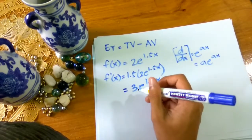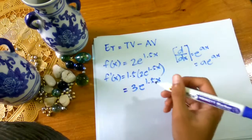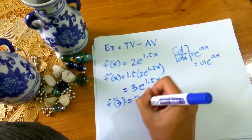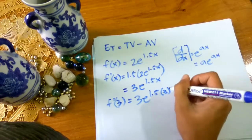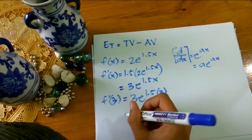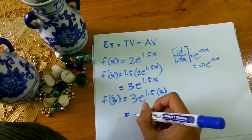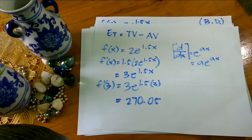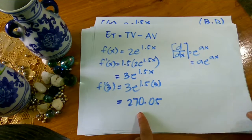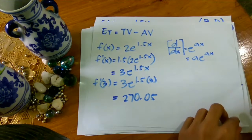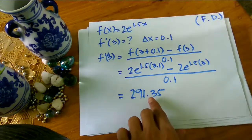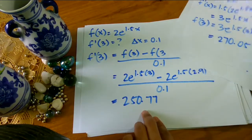So let us now find the true value of this function by using x = 3. We get 3e raised to 1.5 times 3. By calculating this we get the true value 270.05. As you can see, ang true value ng ating function ay 270.05, which is pinakamalapit sa ating central value, because ang ating forward difference ay 291.35, ang ating backward naman ay 250.77, at ang ating central naman ay 271.07.